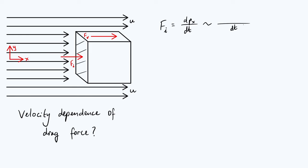We'll keep dt in the denominator. Change in momentum is mass times change in velocity. Splitting the fluid into infinitesimally small fluid elements of mass dm, each element has its velocity reduced from u to zero, so its change in velocity is zero minus u. But so far this is the force on the fluid element, so we use Newton's third law — putting a minus sign in front — and this simplifies to u times dm/dt. The interpretation of dm is the mass of fluid which hits the surface and is brought to rest in that infinitesimally short time dt.